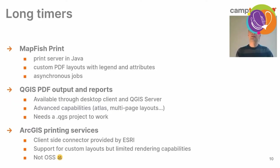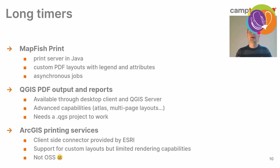I've listed three back-end solutions that have been around for a long time. The first is Mapfish Print, which you've probably heard of. It's a print server in Java, it's open source, and it has a very powerful PDF layout engine. You prepare templates with Jasper Reports, and then Mapfish Print uses them to print the map, the legend, and attribute tables. It can also handle large asynchronous jobs by sending an email when done. It has some limitations — for example, it won't print vector tiles.